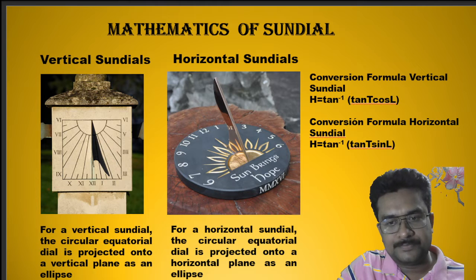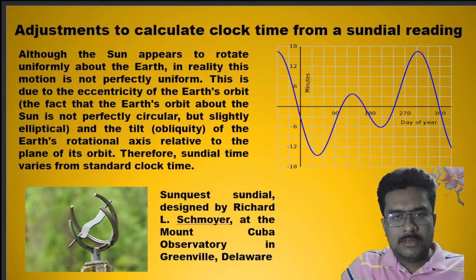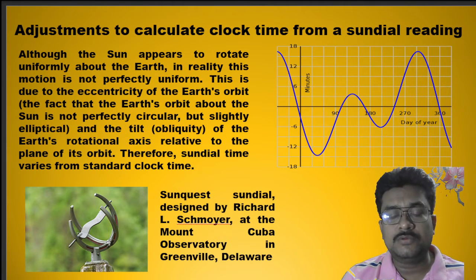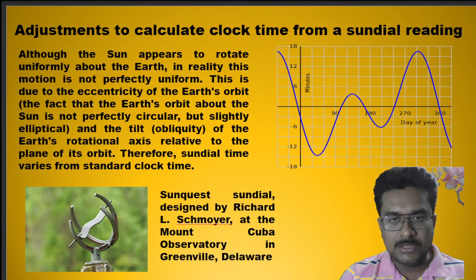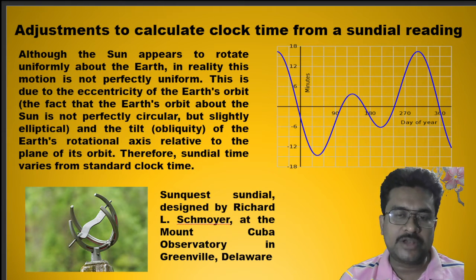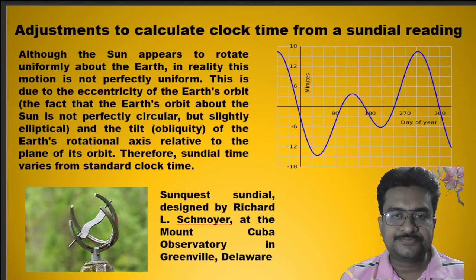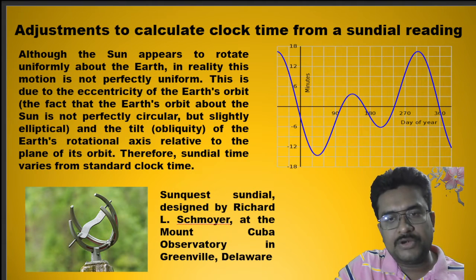Although the Sun appears to move smoothly over the sky, in reality the motion is not perfectly uniform. This is due to the eccentricity of the Earth's orbit and the fact that the Earth's orbit tilts about the orbital plane. Therefore the time measured by the sundial does not actually match the standard local time, so a correction needs to be made. This correction is given by the equation of time, which is depicted here.